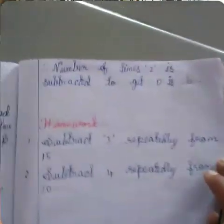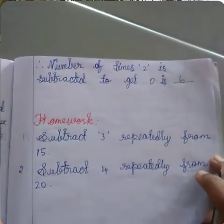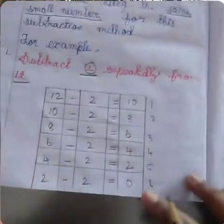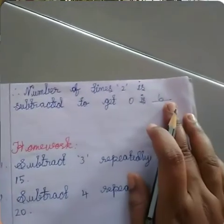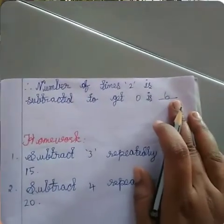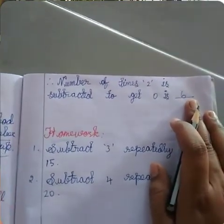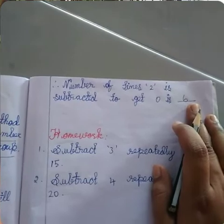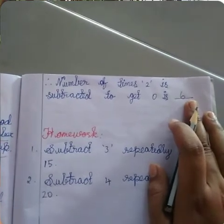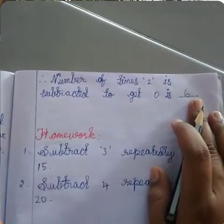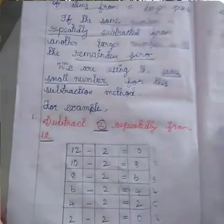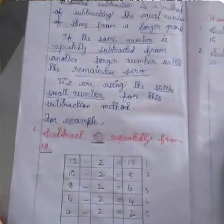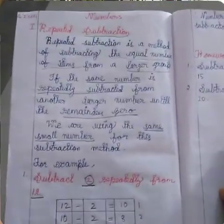So we write 6 here. The number of times 2 is subtracted to get 0 — we are getting 0 in the 6th step, so the answer is 6. 2 is repeatedly subtracted from 12 how many times? 6 times — this is the answer. Repeated subtraction means you are going to do like this. This is the method for repeated subtraction.